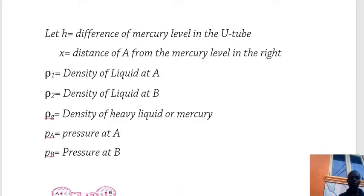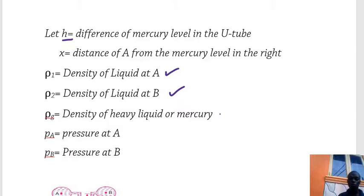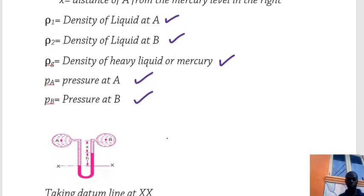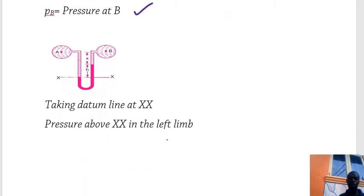Let h be the difference of manometric fluid level in the U-tube, and x be the distance of the fluid from the manometric level in the right limb. Let ρ₁ be the density of liquid at A, ρ₂ be the density of liquid at B, and ρ_g be the density of the heavy liquid or manometric fluid. P_A is the pressure at pipe A and P_B is the pressure at pipe B.